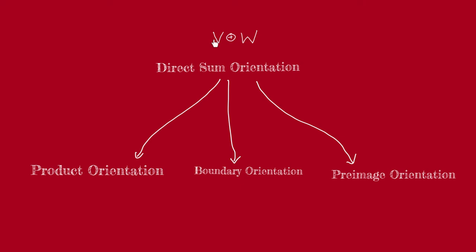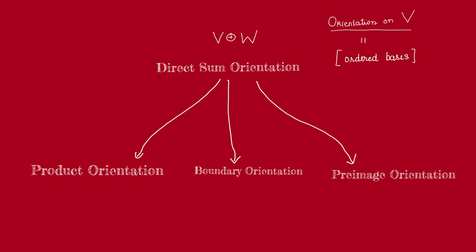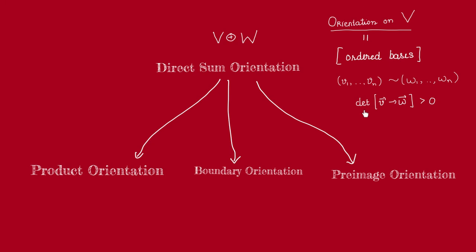That is, if we have two vector spaces V and W, each with a given orientation — in other words, if we have two oriented vector spaces V and W — we want to define an orientation on the direct sum of V with W induced by this. To this end, we need a different way to think about orientation. Recall that we define an orientation on a vector space to be an equivalence class of ordered bases, where two ordered bases are equivalent if and only if the determinant of the change of basis matrix is positive.